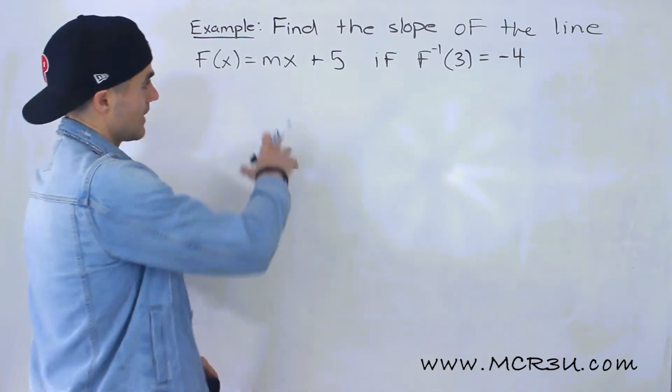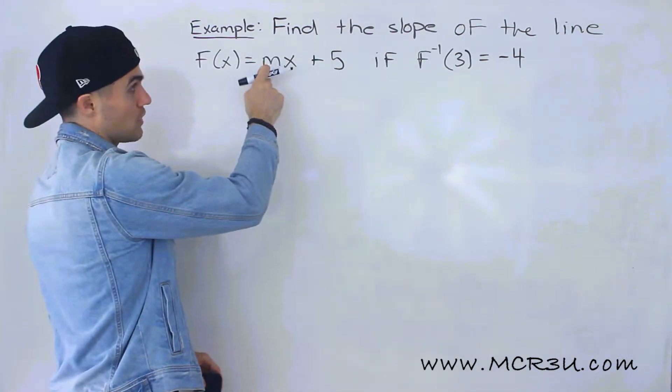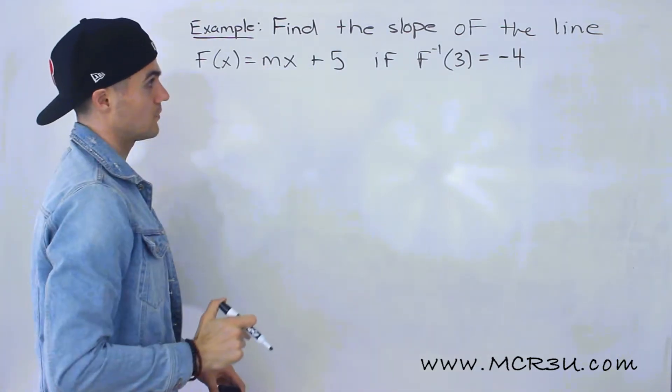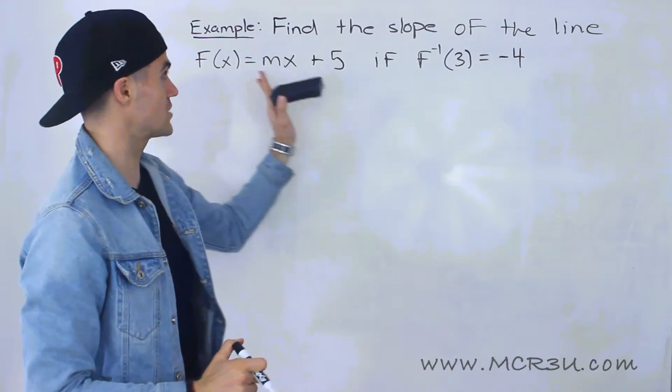So notice that this is in y = mx + b form and we're solving for that m value for the slope. And then notice that we're given this information with the inverse of this.